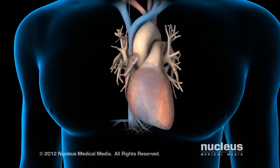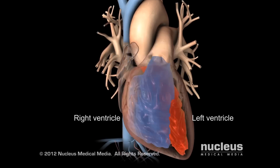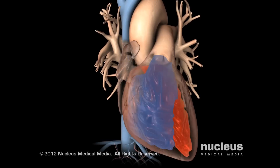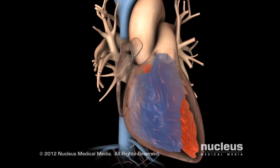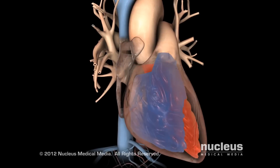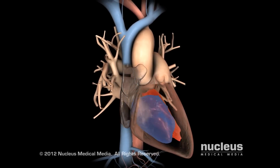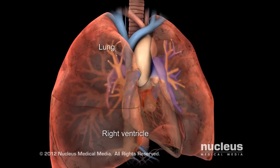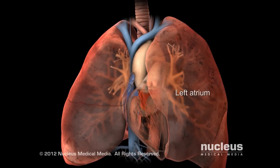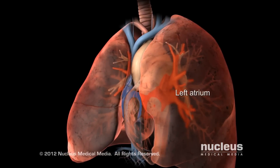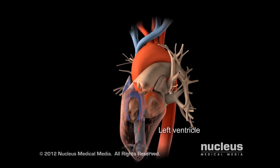Your heart is a muscular organ made up of four chambers: the right and left atria and the right and left ventricles. During a normal heartbeat, the chambers of your heart contract and relax in a rhythmic pattern to deliver a consistent flow of blood throughout your body. The right atrium collects blood from the body and the right ventricle pumps it to the lungs, which bring oxygen to and remove carbon dioxide from the blood. At the same time, the left atrium receives blood from the lungs, and the left ventricle pumps it out to supply your body's tissues with oxygen and nutrients.